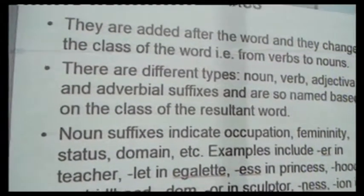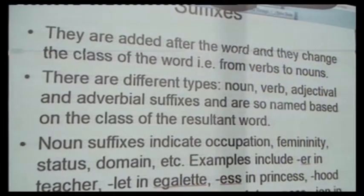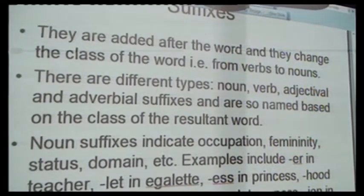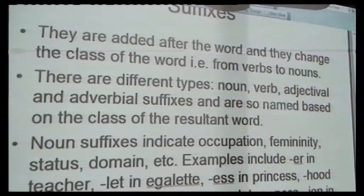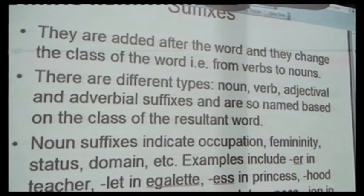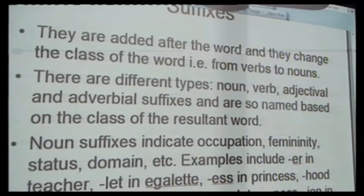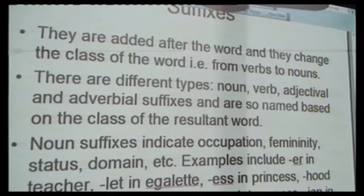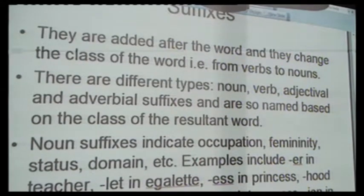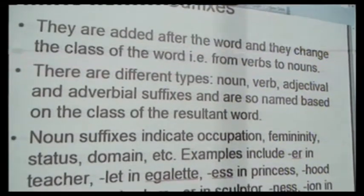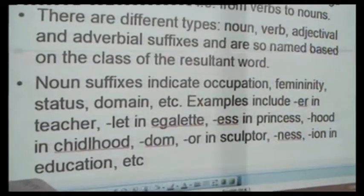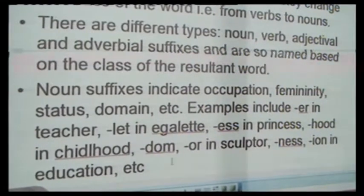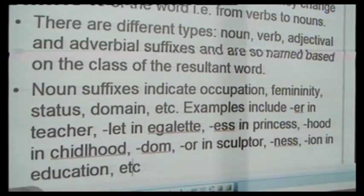We also talk about suffixes. Suffixes are affixes that you add at the end of a root or word. Suffixes usually change the grammatical class of the words they are added to. We have different types of suffixes: noun suffixes, verb suffixes, adjective suffixes, and adverb suffixes, named according to the resultant class of the new word formed. You have noun suffixes such as '-tion' in 'education,' '-dom' in 'kingdom,' '-hood' in 'childhood.' These are affixes that change any particular word to a noun.